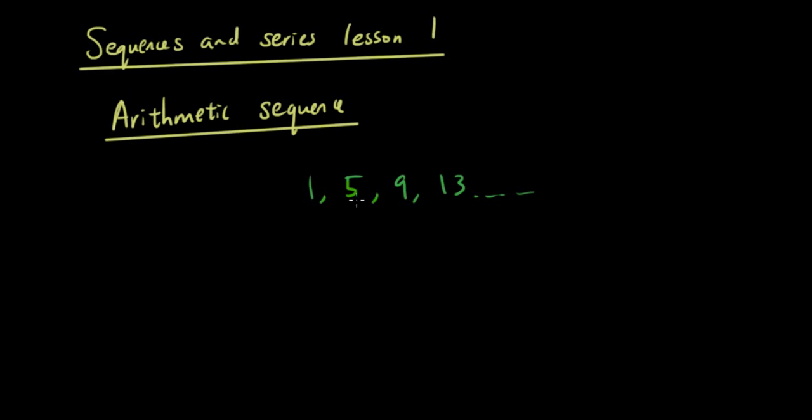So here is a list of numbers. Now you can see here that the difference between each number and its next number is 4, because 1 plus 4 is 5, 5 plus 4 is 9, and 9 plus 4 is 13.